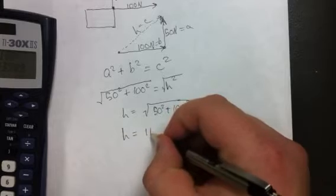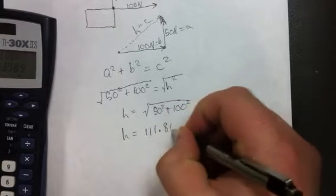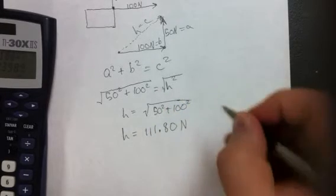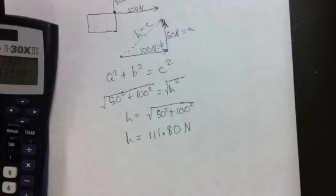So, the hypotenuse is equal to 111.80 newtons. Now, since this is a vector, it also has to have a direction. We have our magnitude, now we also have to have our direction.